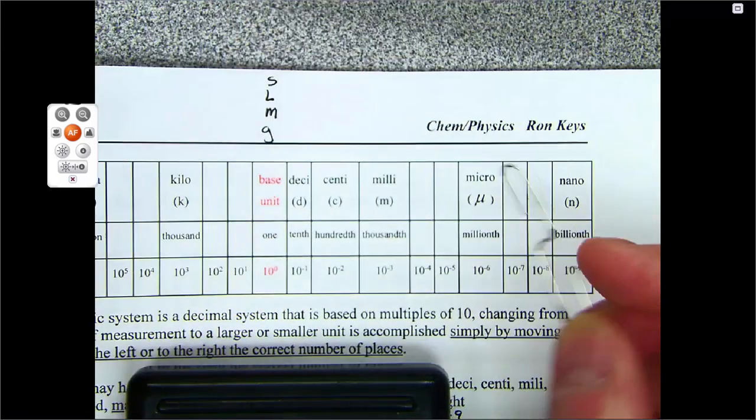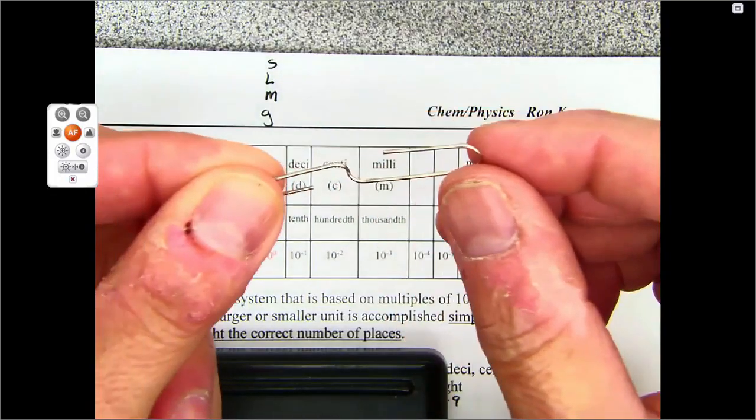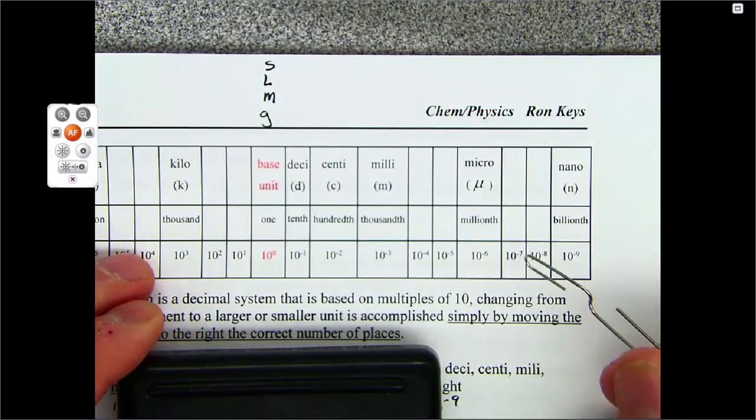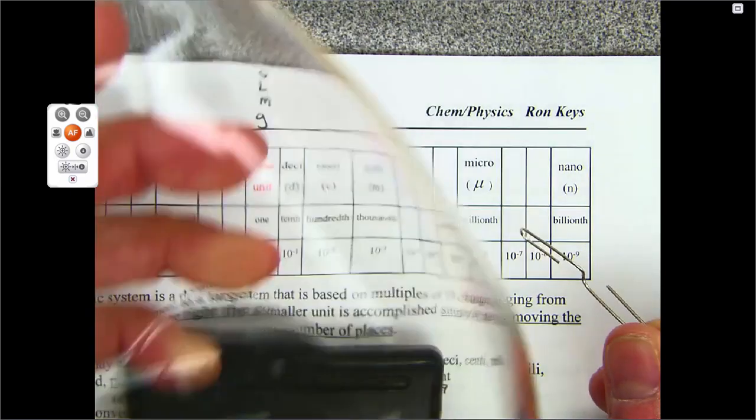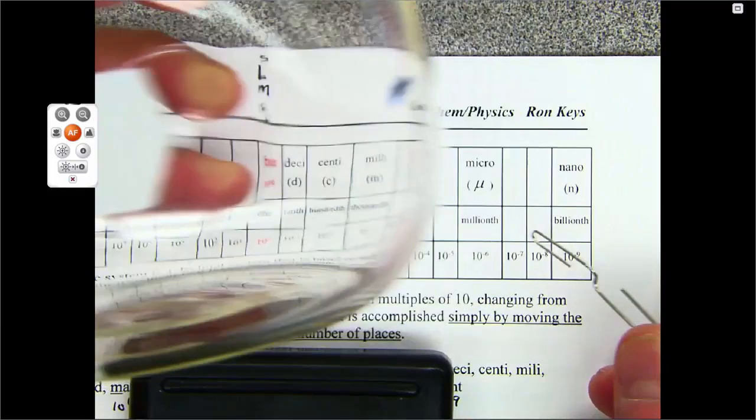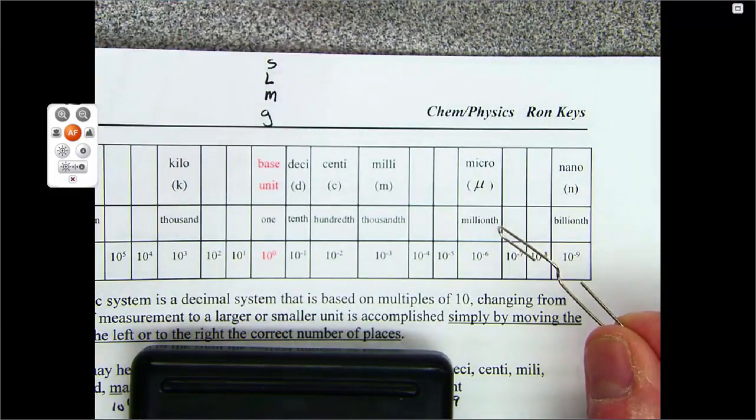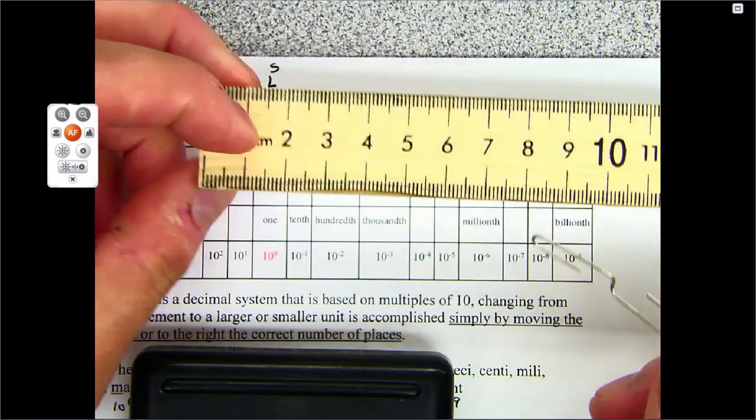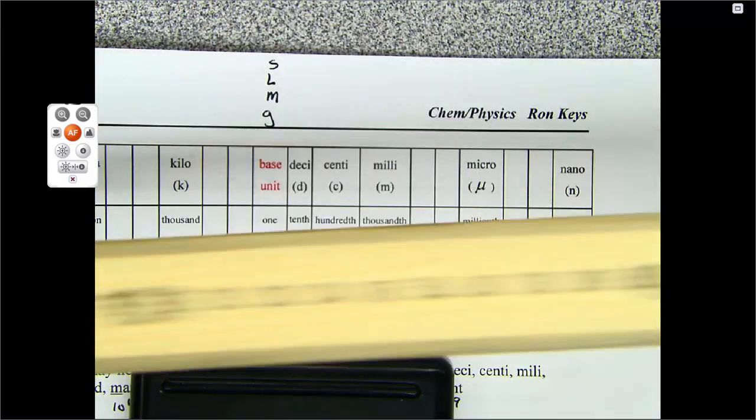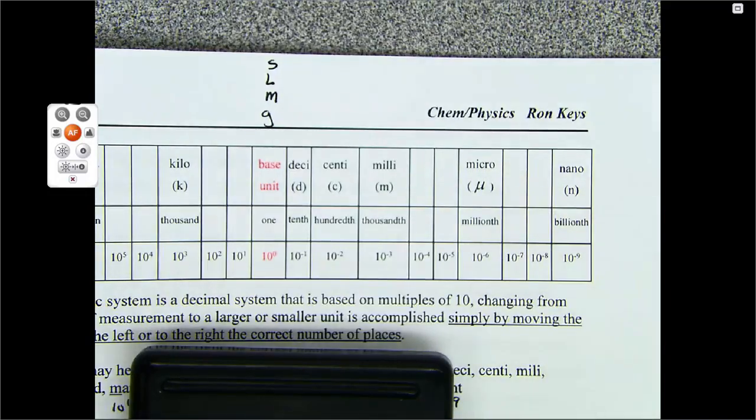If you divided this paper clip up into a million smaller pieces, you would have a microgram. If you divided this liter up into a million pieces, you'd have a microliter. If you took this meter stick and divided it up into a million smaller pieces, you would have a micrometer. It works for everything.